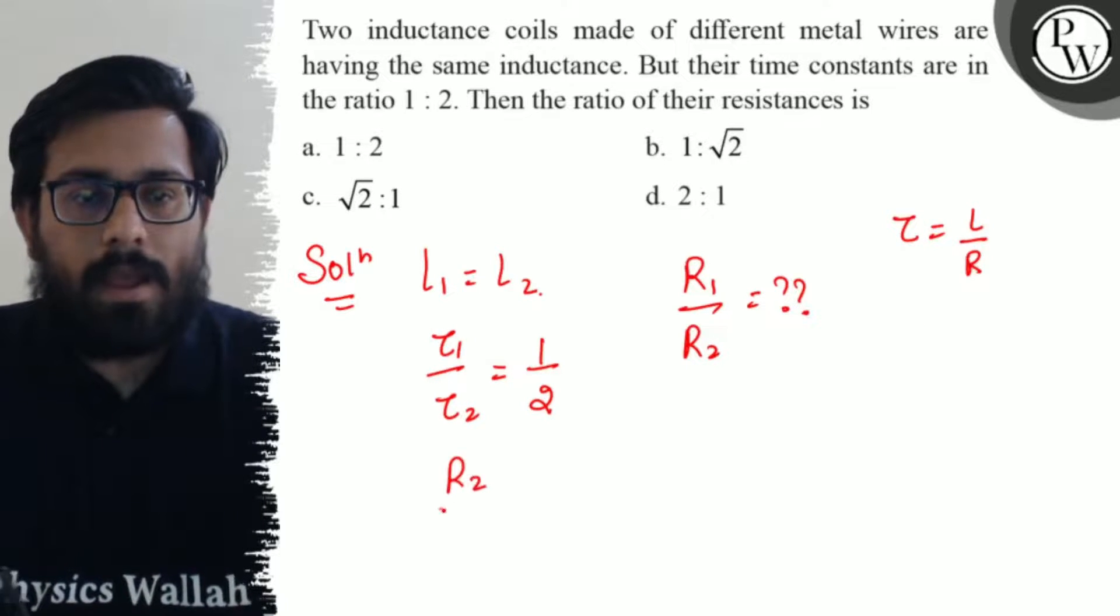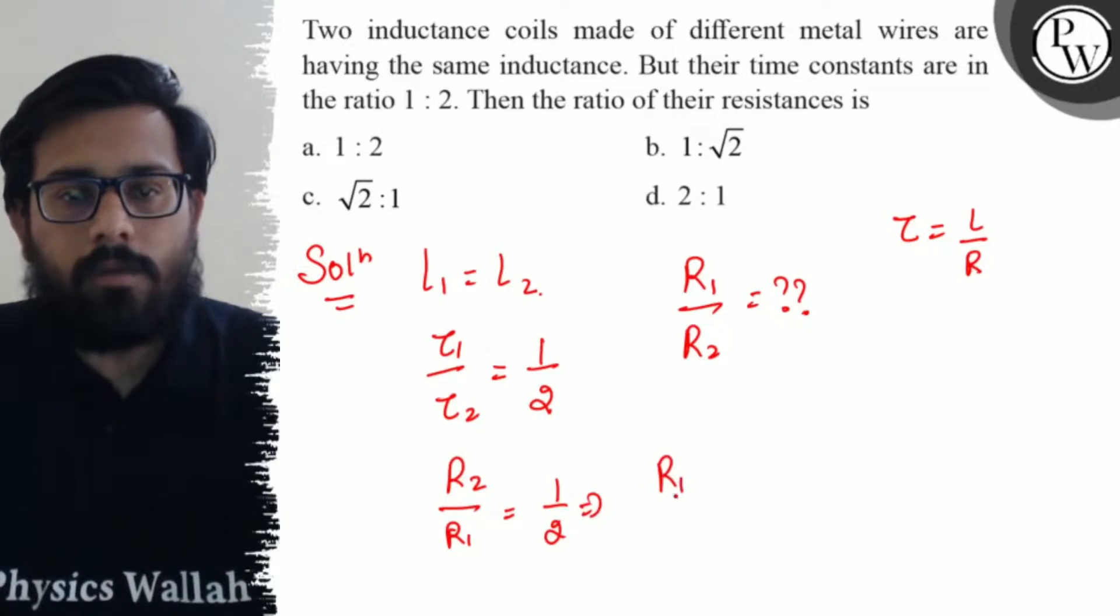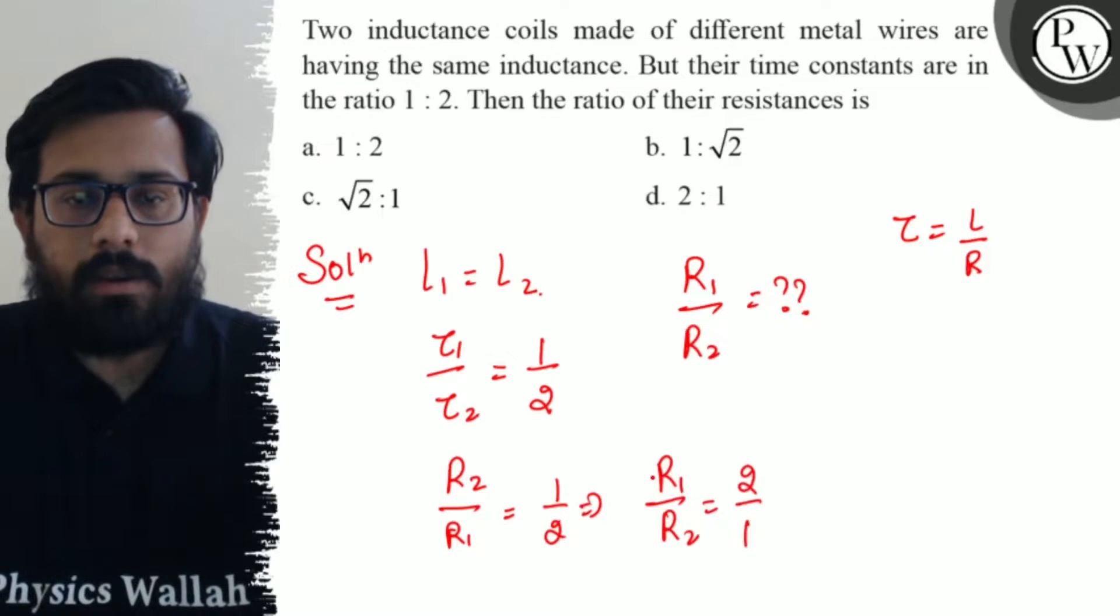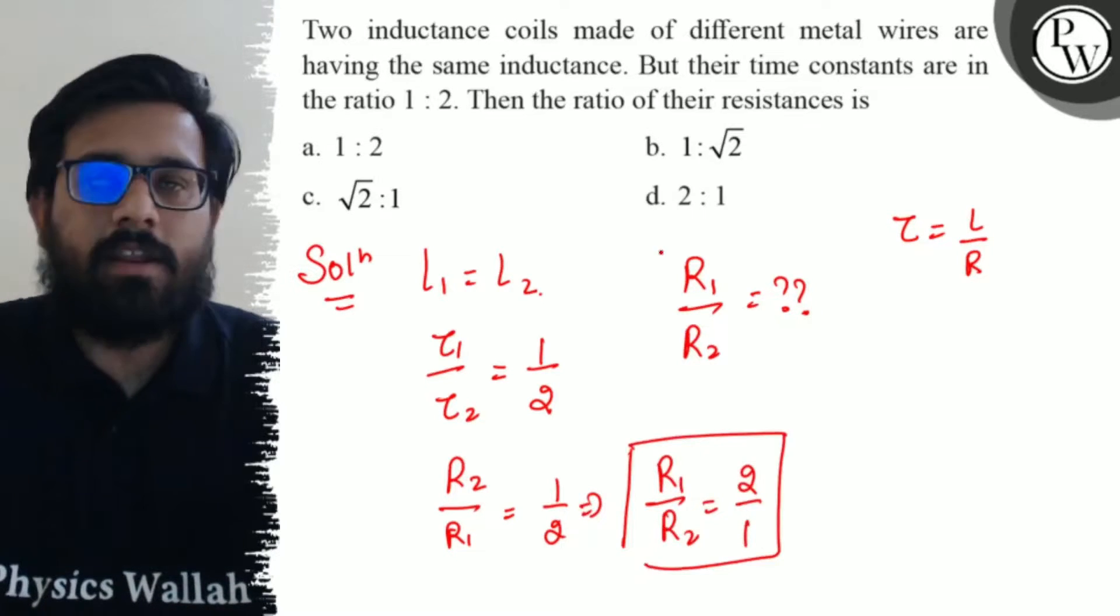That will be equal to 1/2. So from here, R₁/R₂ can be written as 2/1. The ratio of the resistances comes out to be 2:1, which is option d.